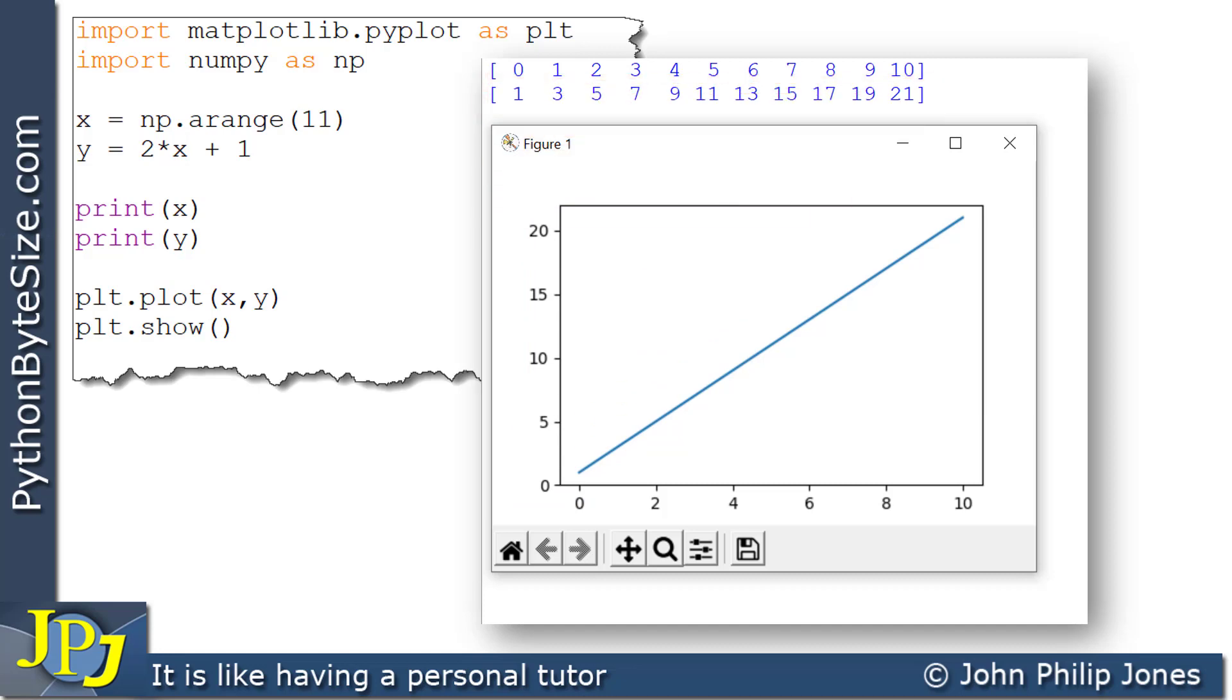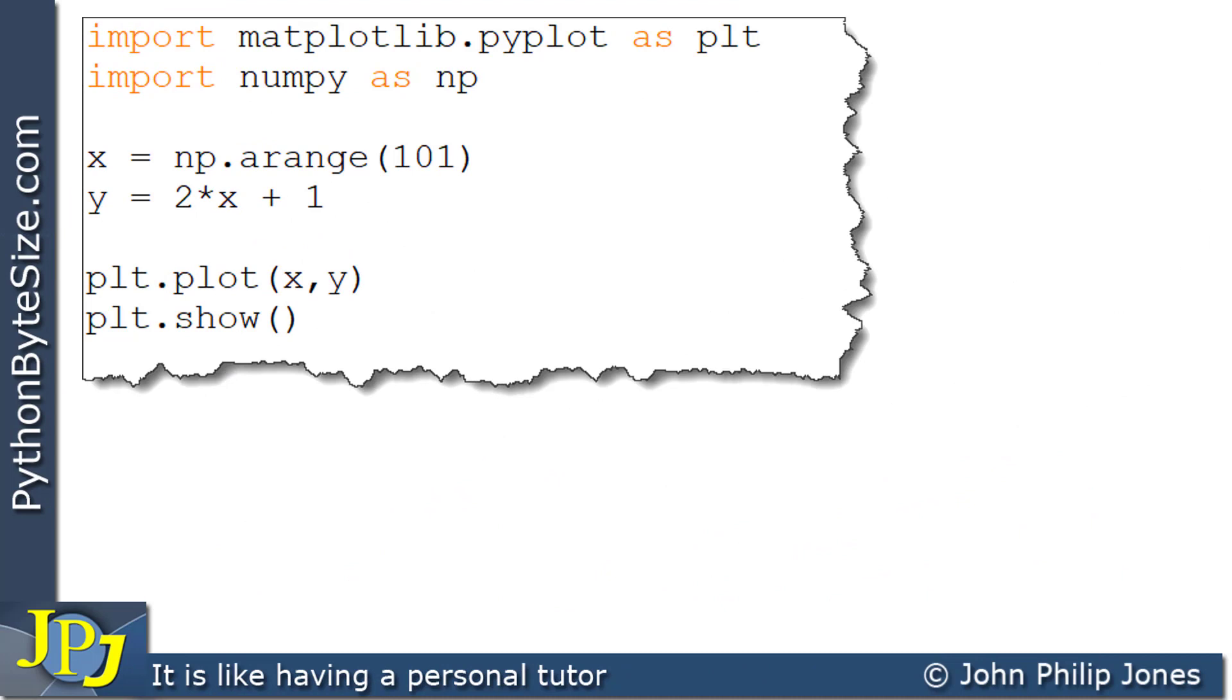Now, I've got rid of the print X and print Y because we should know what is going to go into those now. But have a look here now. Remember, a moment ago it was 11. Now, I've put 101 in. So, I should now see that X goes from 0 to 100. It doesn't include the 101. And what this will do, it'll calculate all across those values from 0 to 100. And this will plot X and Y. So, let's have a look at what we get.